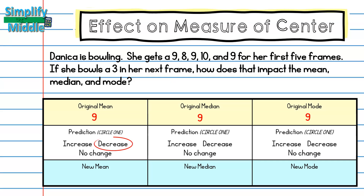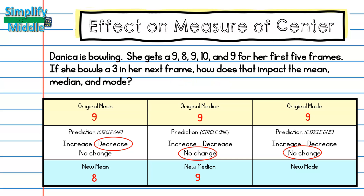For the original data set, the median should be 9 and the mode should also be 9. Now let's check by looking at our new data set after adding the 3. The new mean is 8, the new median is 9, and the new mode is also 9 — there was no change to the median or mode.